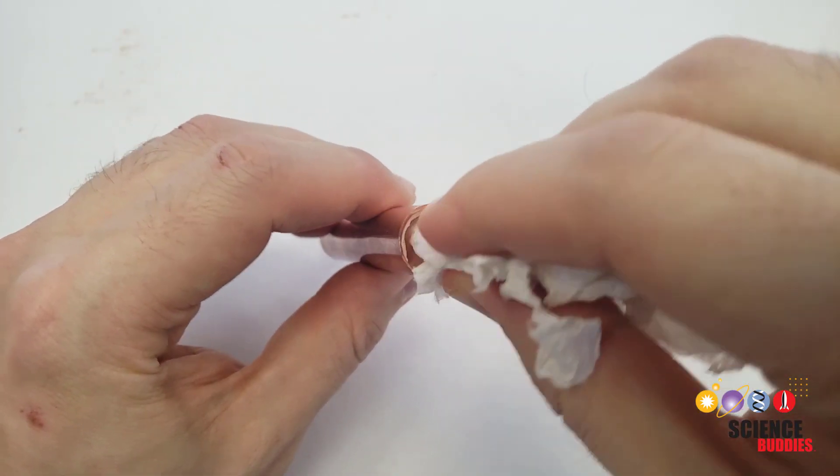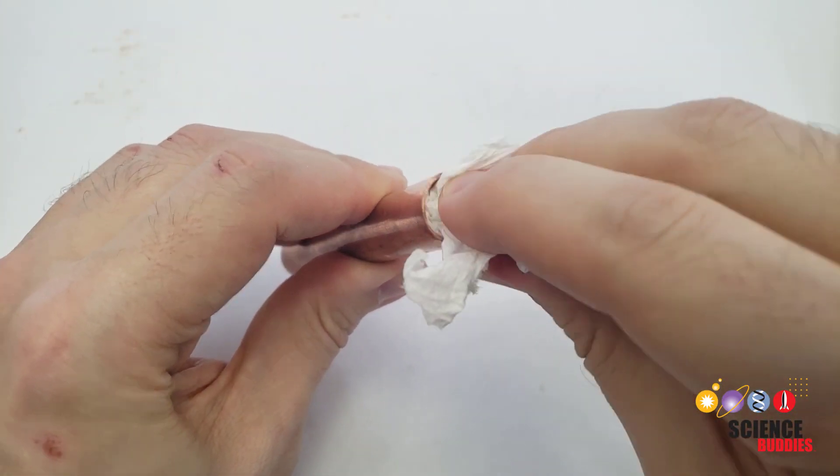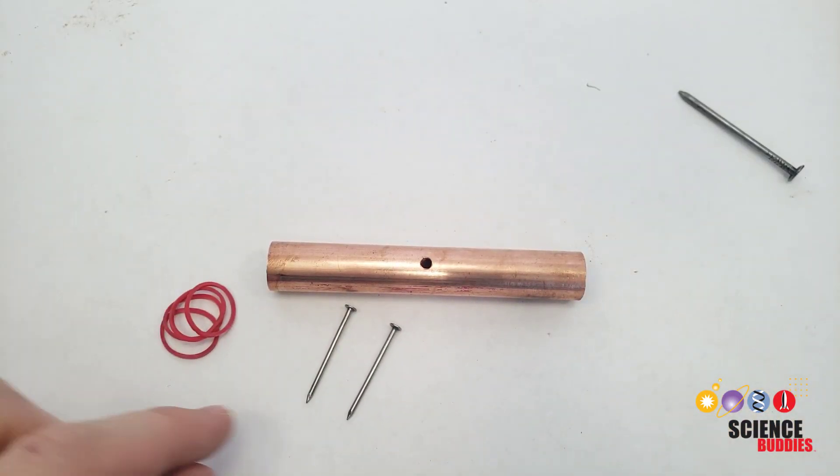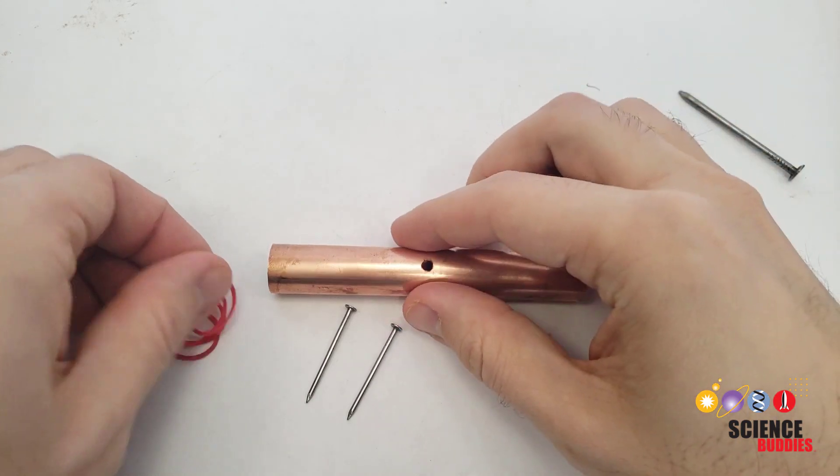Before you continue, you should clean out any new shavings from the inside of the pipe. Now, you'll need two more nails and four small rubber bands roughly the same diameter as the pipe.